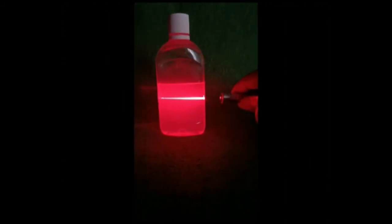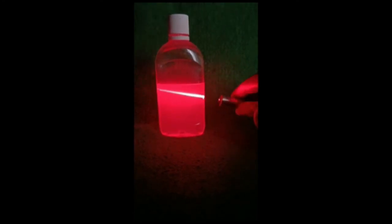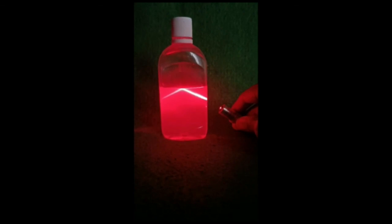Take a toy laser pointer and point it through the bottle. You can see the incident ray goes straight. But as you keep bending it and it strikes the water surface, you can see the light bends after the critical angle. This light bending is total internal reflection.